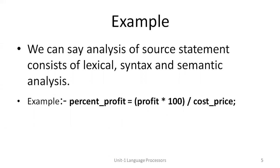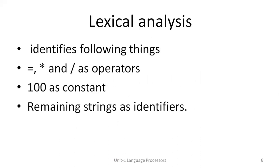On the left-hand side, percent_profit is the variable. On the right-hand side, profit into 100 is calculated, then divided by cost price, followed by a semicolon. This is an assignment statement because of the equal-to sign on the right-hand side acting as assignment.